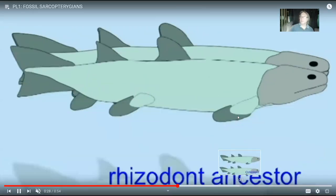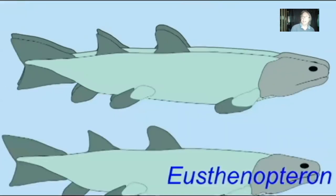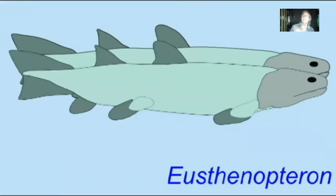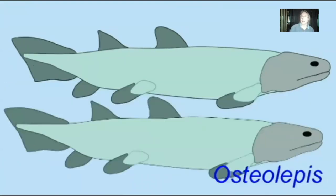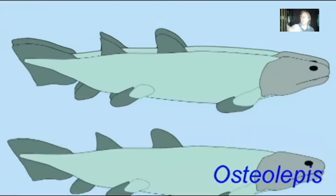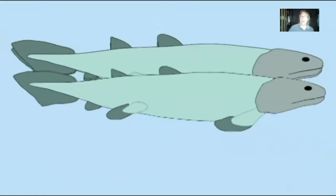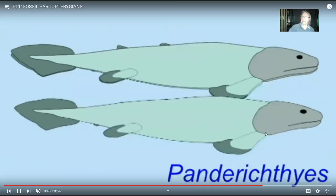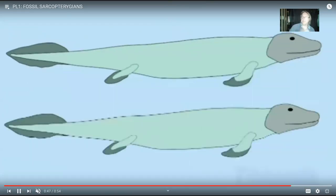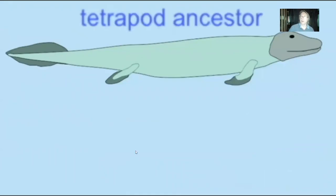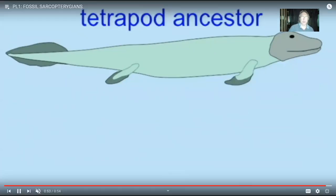There was a great diversity of sarcopterygians in the Devonian period. And then by the end of the Devonian period, some of these fish, which had become more and more like amphibians over time, then at some point were not fish adapted to land, but rather the first tetrapods.